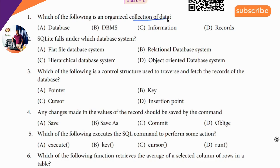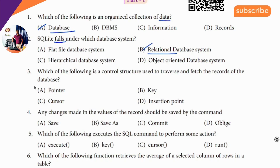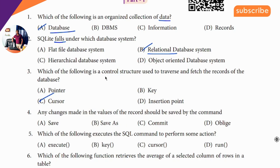First question: collection of data — so data on database. The answer is database. SQLite falls under this. Third question: control structure — the answer is C. In the first word of the lesson, C stands for cursor, so control cursor.